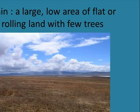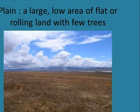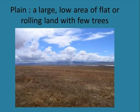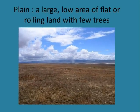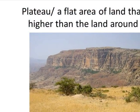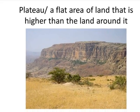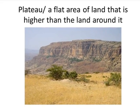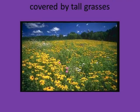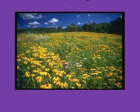A plain is a large low area of flat or rolling land with few trees. A plateau is a flat area of land that is higher than the land around it. A prairie is a region of flat or hilly land covered by tall grasses.